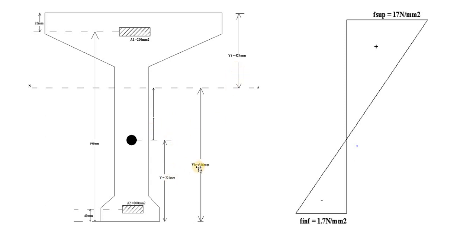Let me explain the stress distribution variation. As we know, compression is positive — I have written plus, and it is occurring at the top, so F superior. Permissible stress is nothing but F superior, F inferior, and so on. F superior is 17 Newton per mm square.